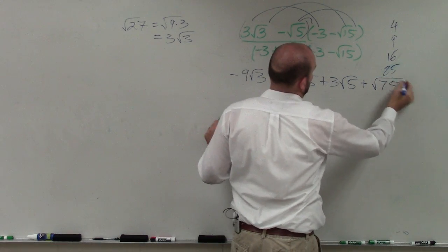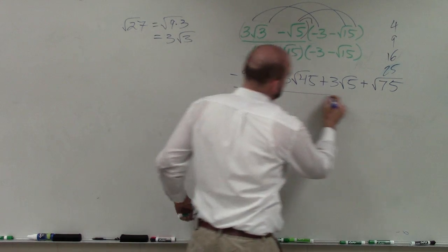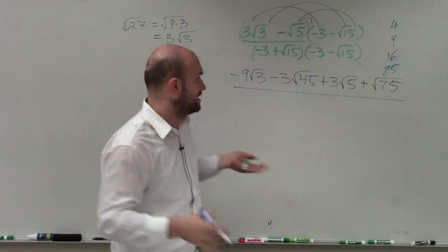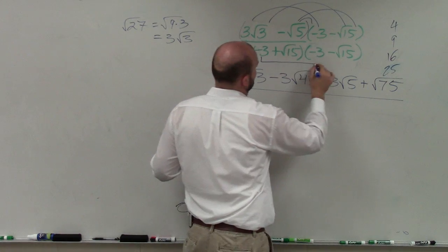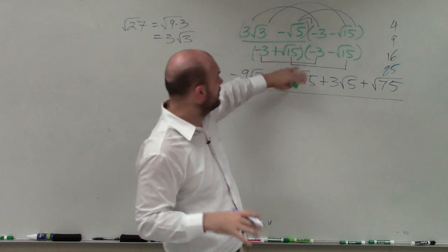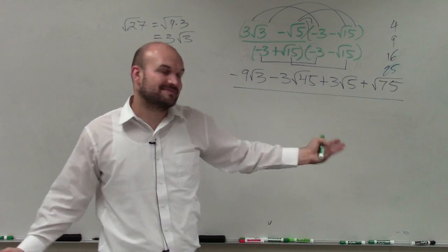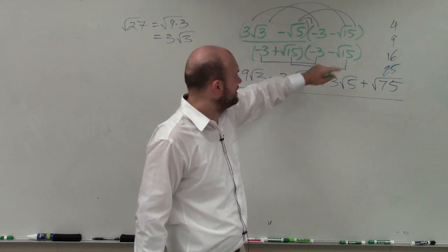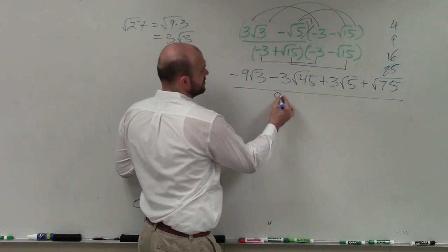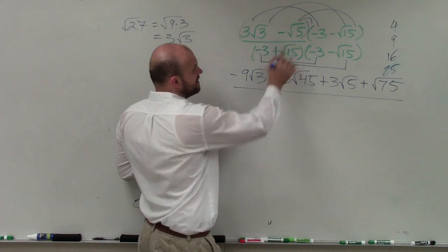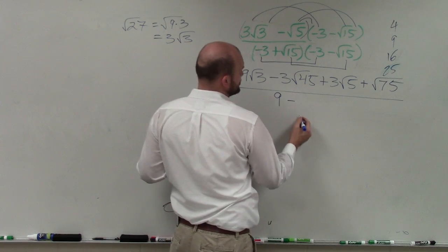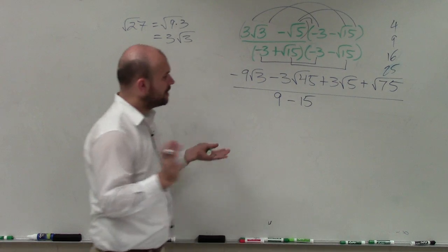Now let's go to our denominator. The reason it's nice to have the difference of two squares is I can just apply that formula. The middle terms add up to zero because they're positive and negative. So I just multiply my first two terms: negative 3 times negative 3, which is 9. Then my last two terms: negative square root of 15 squared, which is just 15. So the denominator becomes 9 minus 15, which is negative 6.